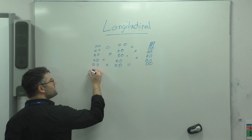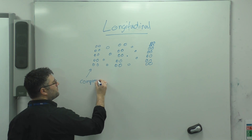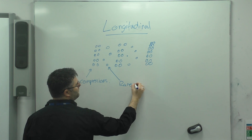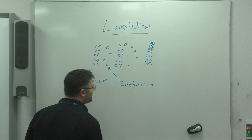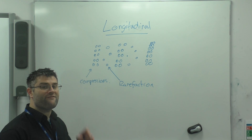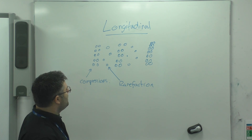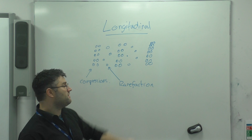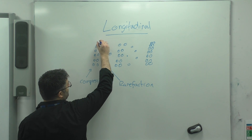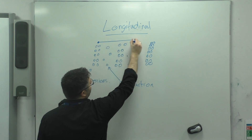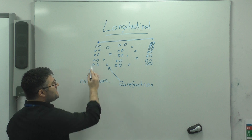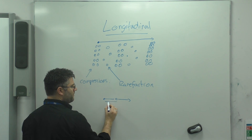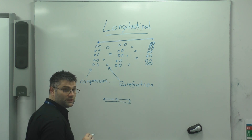Here we've got compressions — these are points where the particles are compressed together. And here we've got what's called a rarefaction. Not rarefraction — make sure you check your spelling on that one: rarefaction. It's the compression and rarefaction that allow energy to be transferred down the line. What we'd expect to see is a compression of the particles moving from one point all the way down. Each of these particles is going to the left and then to the right from its equilibrium position — all of them doing that at the same time.